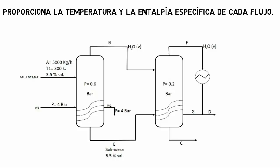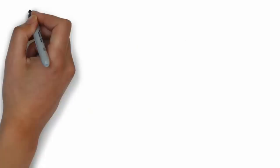The steam generated in the first evaporator feeds a set of tubes in the second evaporator. The condensate from the tubes and the steam generated in the second evaporator at a pressure of 0.2 bar constitute the pure water produced during the process.